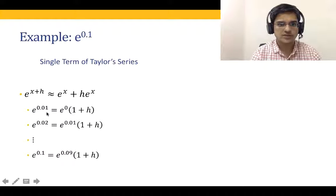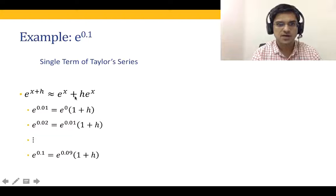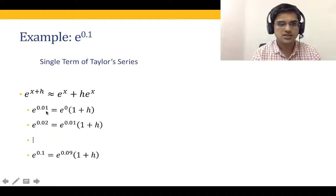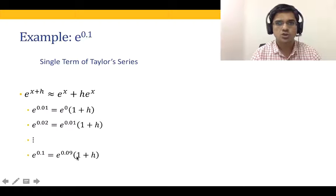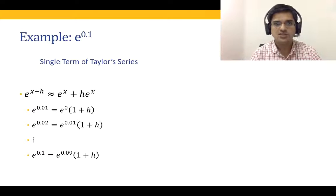So e to the power 0.01 is going to be 1 multiplied by 1 plus h. Why? Because using the Taylor series expansion, e to the power x plus h is f of x, which is e to the power x, plus h multiplied by f dash of x. Therefore, e to the power 0.01 is 1 multiplied by 1 plus h. e to the power 0.02 is this value, e to the power 0.01, multiplied by 1 plus h, and so on. At each time, the new exp value at the next point is the exp value multiplied by 1 plus h.